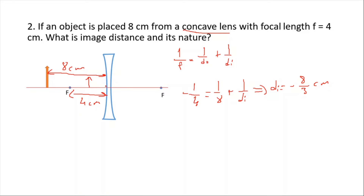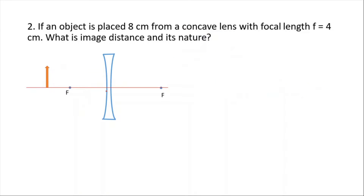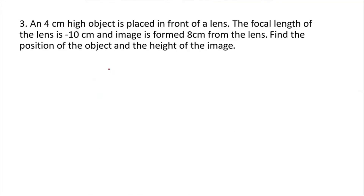The image is upright and located between the focal point and the lens. In concave lenses, wherever the object is placed, the image is always between the focal point and the lens — always upright and always a virtual image. Let's look at the next example.